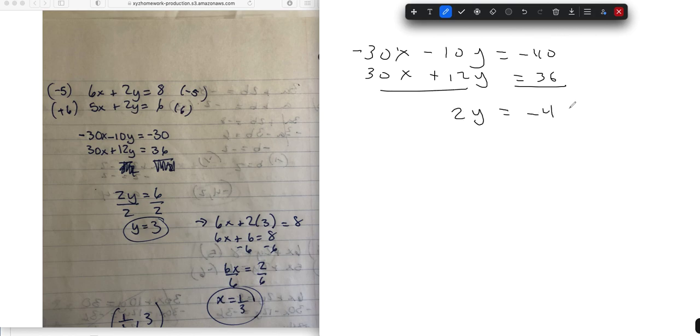That equals negative 4, and then we end up with y equals negative 2. I think if you back solve that, it will come out to positive 2 for the x. Let's see, 6 plus 2 times negative 2...